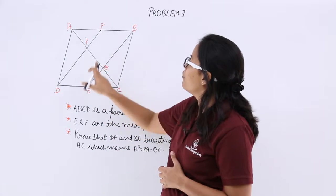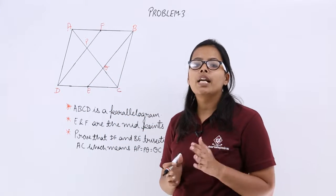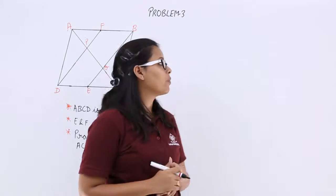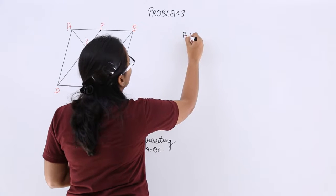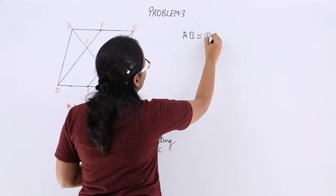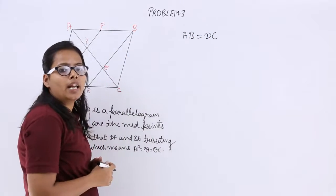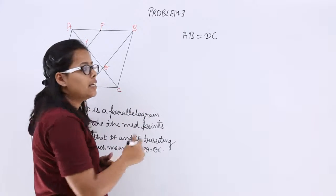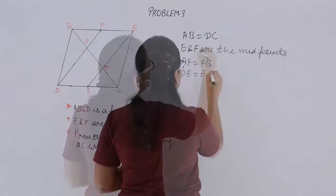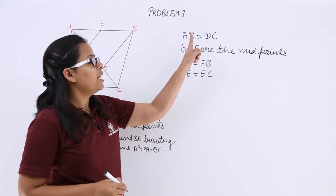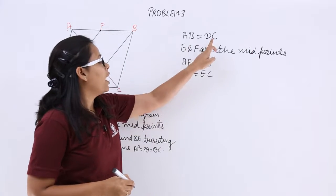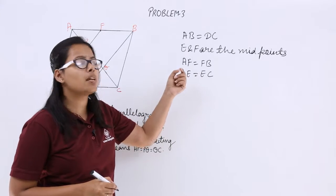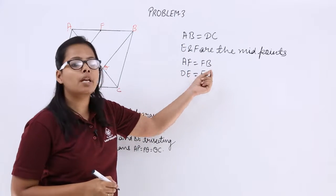You know that F and E are the midpoints. And you know that in a parallelogram, opposite sides are equal. You know that AB is equal to DC, and E and F are the midpoints of AB and DC. So DE will become equal to EC, and F is the midpoint of AB, so AF will become equal to FB.